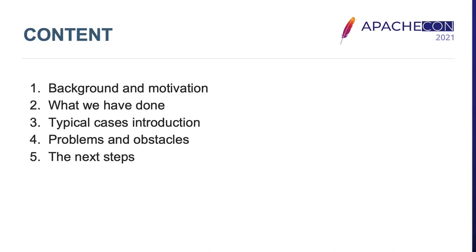The content is divided into three parts. In the first part, we will introduce the background and motivation, including the original intention and why we want to do it. In the second part, I and my partner Liu Sheng will introduce what we have done, taking Hadoop as a typical case. In the final part, Martin will share more typical cases and give a more detailed introduction about ARM CI infrastructure from the Apache Foundation. Finally, we will share some problems and future steps for Apache project ARM support.